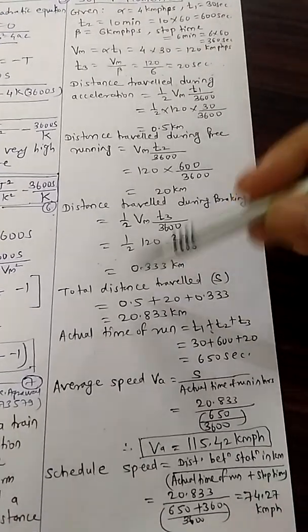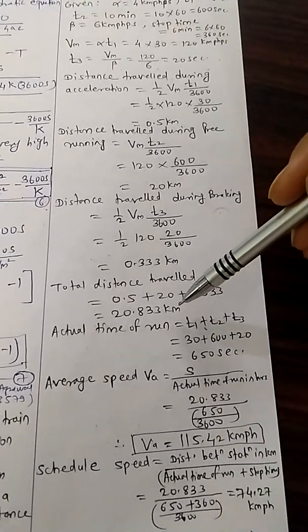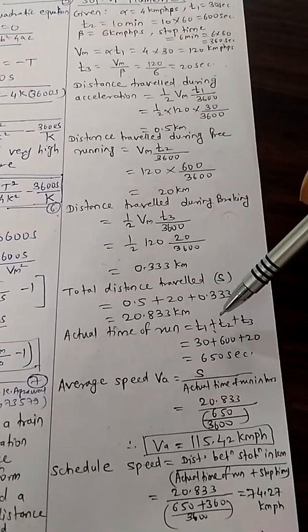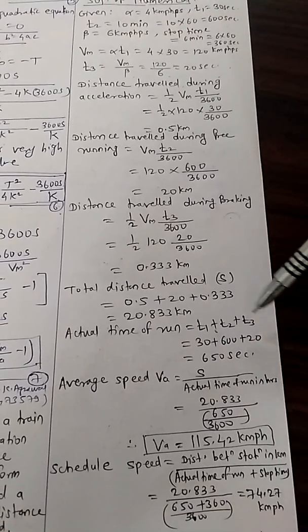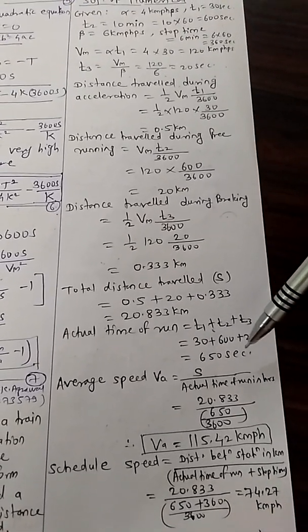Total distance travelled by adding all three distances, you will get 20.833 km. Actual time of run is total time T1, T2, T3 here, that is 650 seconds.